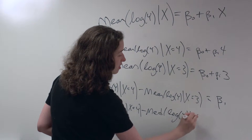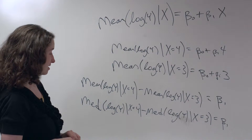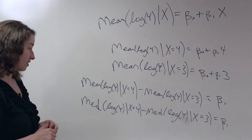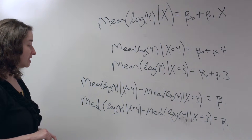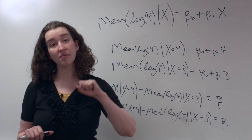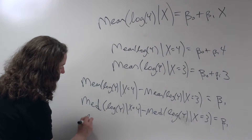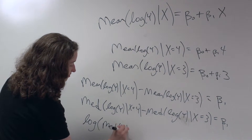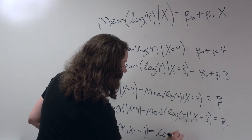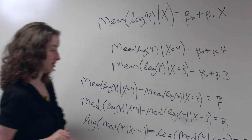So now I have this statement that when x changes from 3 to 4 — when we add 1 to x — the median of the log of y increases by beta 1. Now, remember that I get to switch the log and the median, because if you have a bunch of values in order, the middle one is the median, and if you log all those same values, it'll still be the middle one that is the median. So I'm going to write: the log of the median of y given x equals 4, minus the log of the median of y when x equals 3, is equal to beta 1.